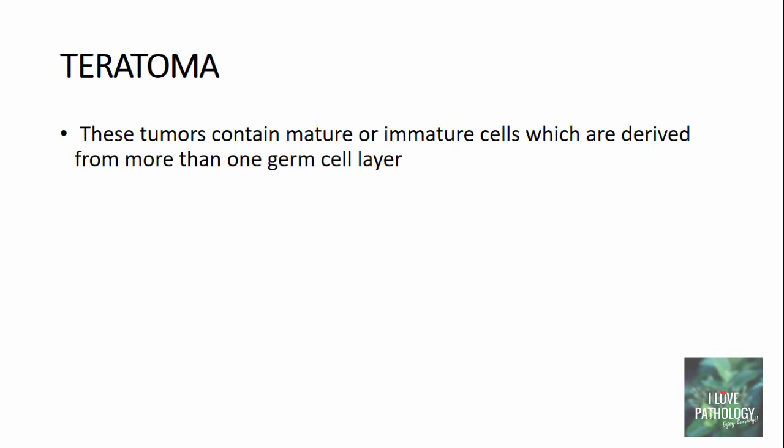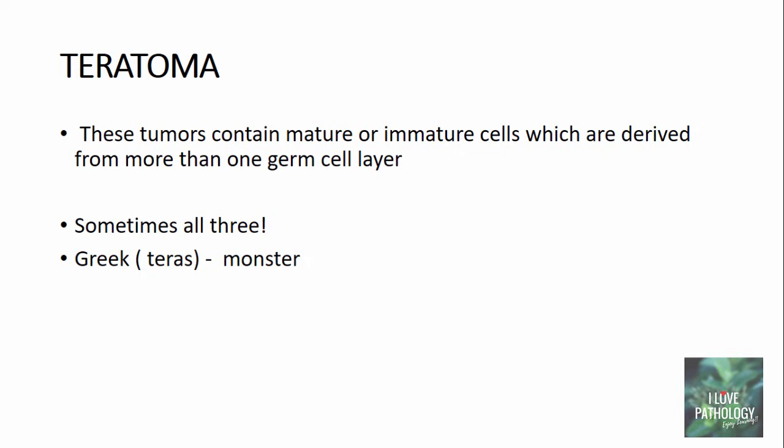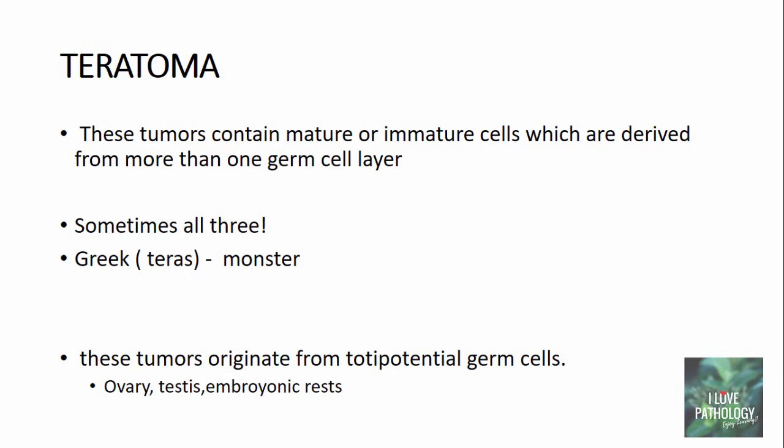Another important terminology is teratoma. Teratomas are tumors which contain mature or immature cells derived from more than one germ cell layer — sometimes all three: ectoderm, endoderm, and mesoderm. The word teratoma comes from the Greek word teras, meaning a monster. These tumors originate from totipotential germ cells found in the ovary, testis, and embryonic midline. These totipotential germ cells have the ability to differentiate into any cell line — endodermal, mesodermal, or ectodermal — and thus can differentiate into any cell type in the adult body. That is why teratomas contain a varied mixture of cell populations arising from different cell types. The most common example is the teratoma arising in the ovary.